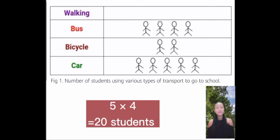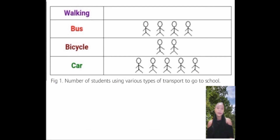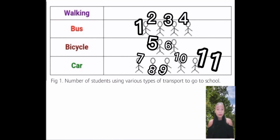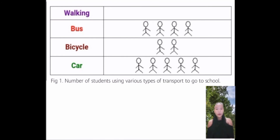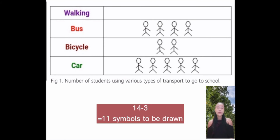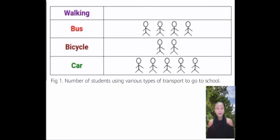For letter B: If the total number of students involved in the survey is 56, how many symbols must be drawn for students walking to school? 56 students should be represented by 56 divided by 4, which equals 14. There are already 11 symbols. Therefore, 14 minus 3 is equal to 11 — 11 symbols must be drawn added for walking.